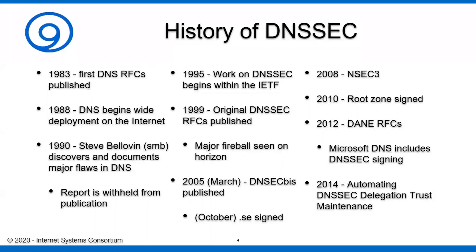In 2014 we received a new RFC documenting the automation of DNSSEC delegation trust maintenance. We'll talk a lot towards the end of this series about how to roll over a key — how you change your key material so that people with either the older key and newer signatures or the newer key and older signatures can continue to work, even though the key material underneath is changing. There were some major updates in 2014, including the introduction of the CDS record, which allows a DS record in the child.